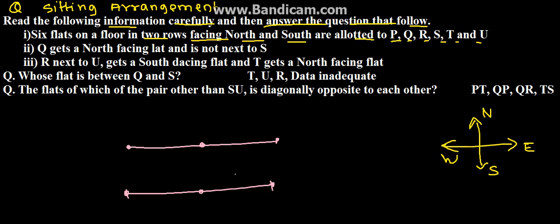Q gets a north facing flat and is not next to S. So Q gets a north facing flat, which means this is a south facing flat.